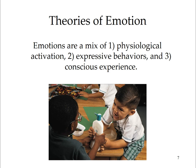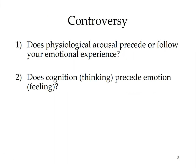An emotion is a response of the whole organism involving an interplay among physiological arousal. The James-Lange theory states that our experience of an emotion is a consequence of our physiological response to a stimulus — we are afraid because our heart pounds in response to an approaching danger. The core controversy is: does physiological arousal precede or follow our emotional experience? Does cognition (thinking) precede emotion (feeling)?